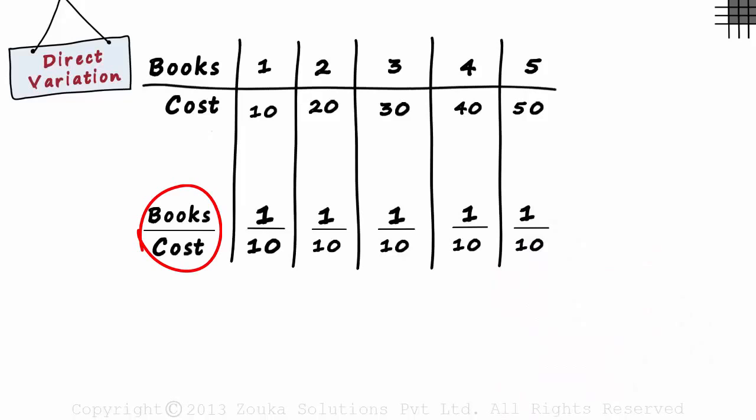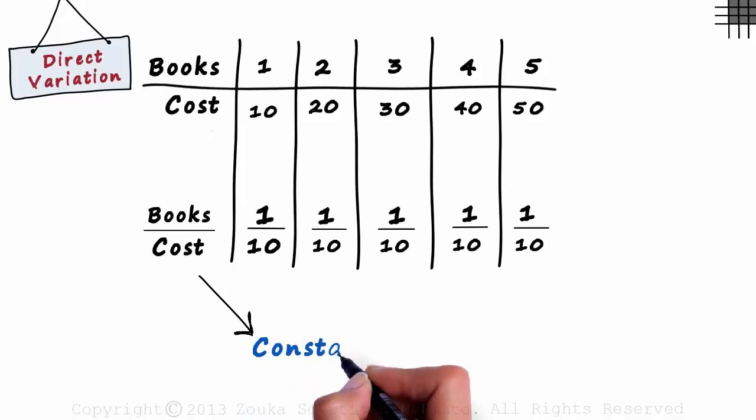The ratio of the number of books to the cost will remain a constant. It is always equal to 1 by 10. This is direct variation.